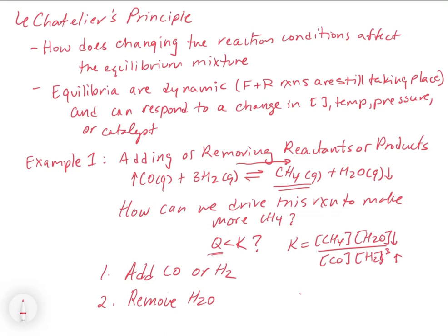Whether we increase the left side or decrease the water, either one of those is going to push the equilibrium out of balance and make it favor more CH₄. Think of it as a balance: if you pump up the left side by adding stuff to it, you have too many reactants and too little product, so the reaction wants to go forward. Likewise, taking away water on the right side lowers that side, pushing the reaction right. Our possibilities for making more CH₄ would be to add CO or H₂, or remove water.